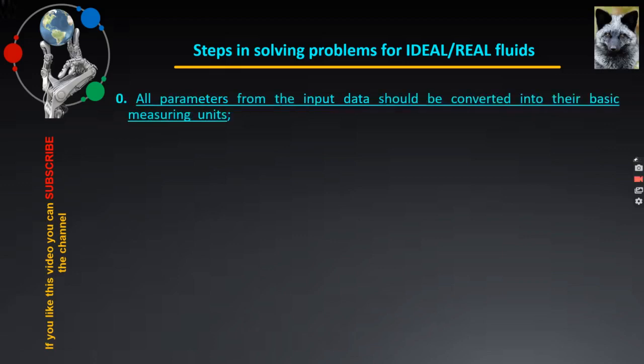As step zero, an additional action has been added, reminding that all parameters in the output data must be presented in their basic measuring units, which means where necessary, the values are converted. The equations used in the problem solving require all the parameters involved in the substitution to be in basic units of measurements. This is extremely important, which is why I advise it to be done in the beginning, even before moving on to the actual solution of the task.